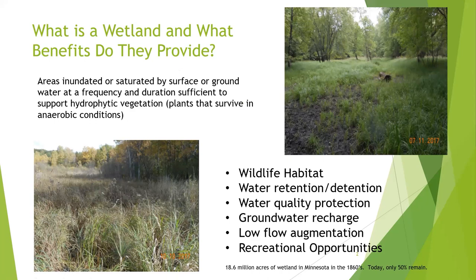From that definition we can extract three different requirements. First, we need hydrology — you need water, and that doesn't mean standing water; it means water during the growing season within 12 inches of grade. So there could be saturated soil, not actually standing water, and it still meets that requirement. Because of the saturation, anaerobic conditions are created and hydric soils form — soils that lack free oxygen. There's a type of plant, hydrophytic vegetation, that has evolved to thrive in hydric soils. So if you have the hydrology, the soils, and vegetation, you meet the criteria of a wetland.